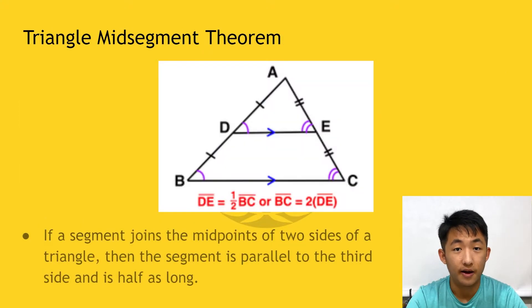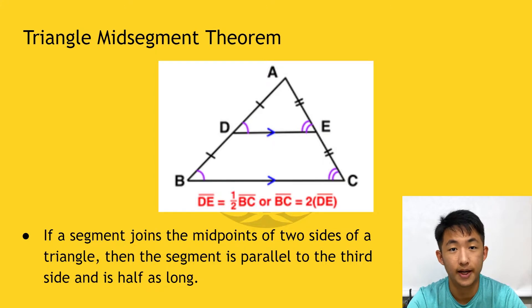Now let's take a look at the triangle midsegment theorem. By the triangle midsegment theorem, the midsegment of a triangle is always parallel and half as long to the third side. As seen in this diagram, segment DE is half the length of segment BC. These two segments are also parallel.